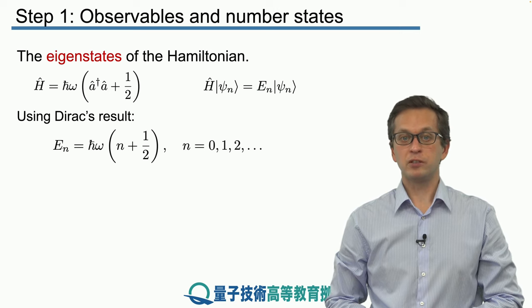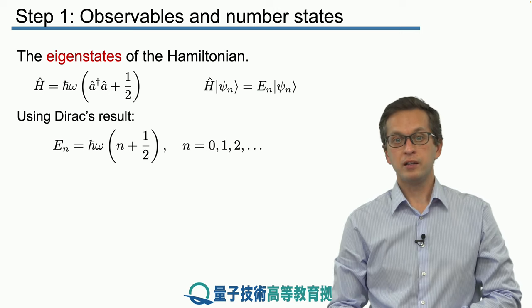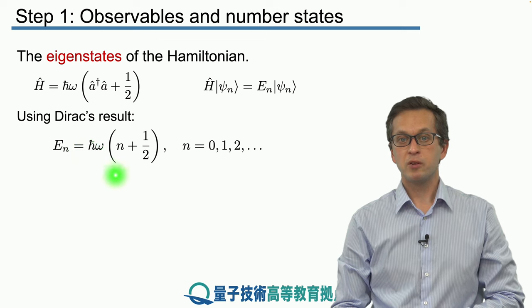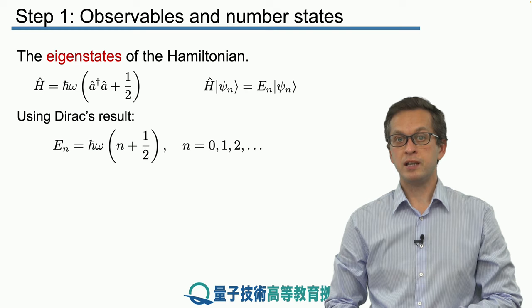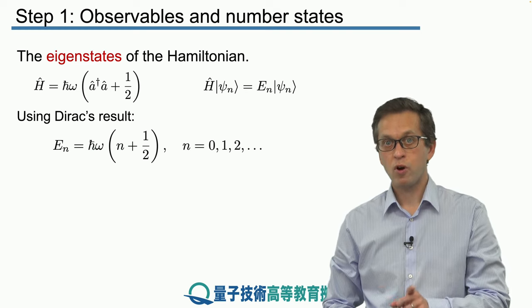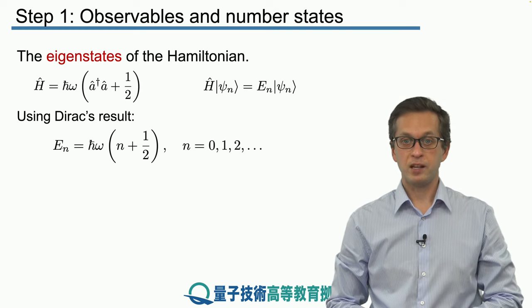We have H|ψₙ⟩ = Eₙ|ψₙ⟩. Using Dirac's result, we know these energies are Eₙ = ℏω(n + 1/2), where we replace the number operator with its eigenvalue n. n can only be 0, 1, 2, and higher—never negative.